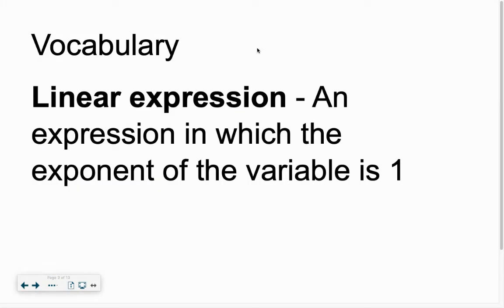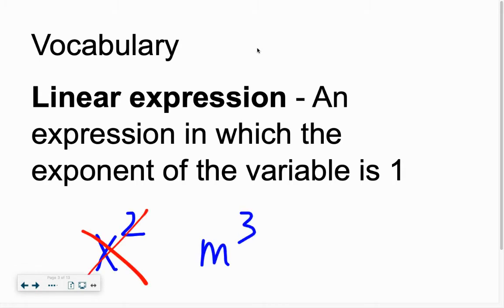Today when we look at our vocabulary, we're talking about a linear expression. It's an expression in which the exponent of the variable is 1, so you'll never see an x squared or m to the third power. You're not going to see that. Everything today will just be the exponent of 1, like a, or c, or just plain x — just to the power of 1.